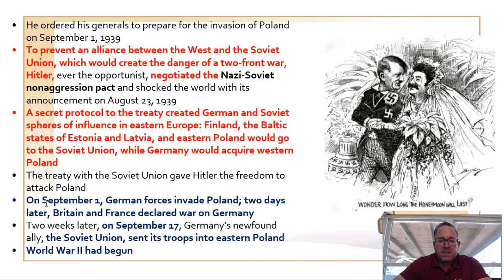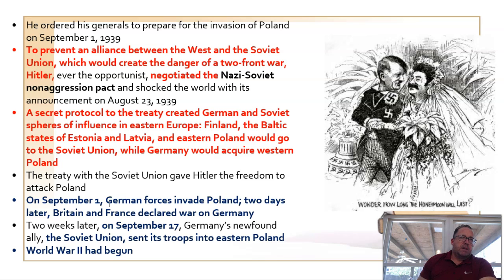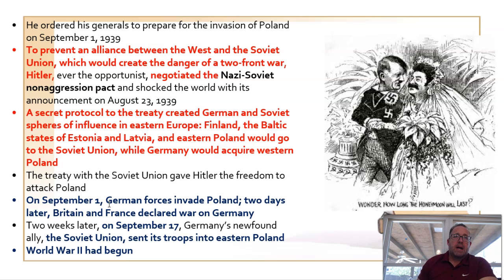Germany invaded Poland on September 1st. Neville Chamberlain issued an ultimatum to Hitler: get out or we'll declare war. Hitler thought they were bluffing and did nothing. Two days later on September 3rd, Great Britain and then France declared war on Germany — though they did nothing to actually help Poland, which was disappointing for the Poles. September 3rd, 1939 is the date historians use to mark the start of World War II. Two weeks later, the Soviet Union sent troops into eastern Poland and Poland fell relatively soon.